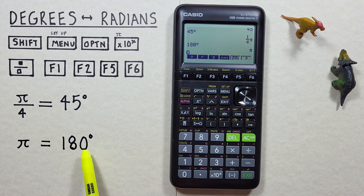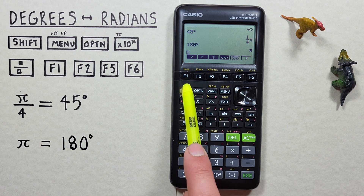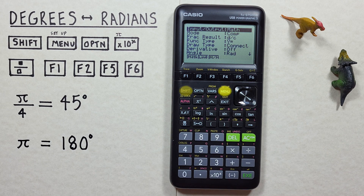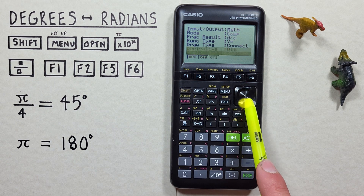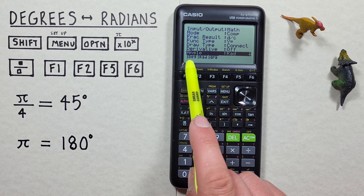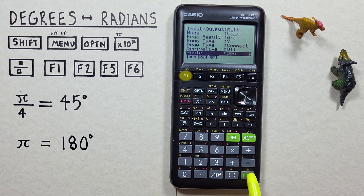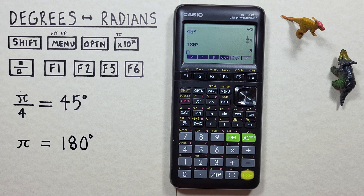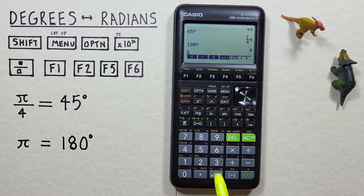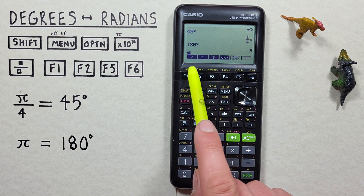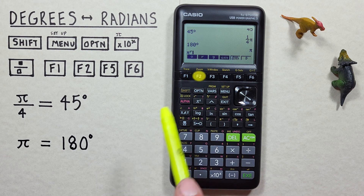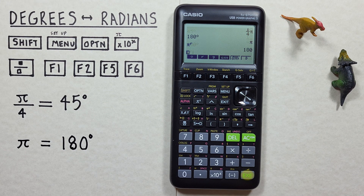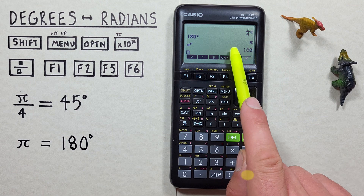And if we want to convert our pi radians to 180 degrees, we do this by first changing our calculator to degrees mode — so shift, menu. Scroll down to the angle and choose degrees, f1. Then we enter our pi using shift times 10 to the x. And then tell our calculator these are radians, so f2 from our angle menu. And press execute. And we get 180 degrees.